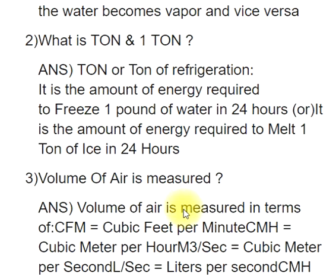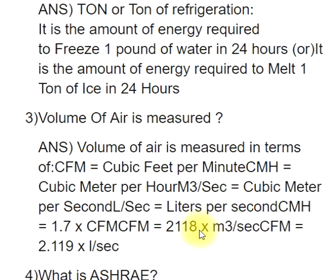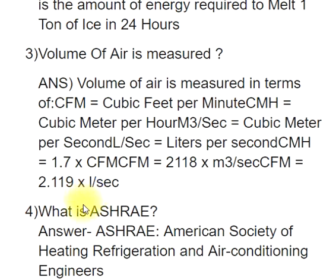Q3: Volume of air is measured. ANS: Volume of air is measured in terms of CFM (cubic feet per minute), CMH (cubic meter per hour), M3/s (cubic meter per second), L/s (liters per second). CMH equals 1.7 × CFM; CFM equals 2118 × M3/s; CFM equals 2.119 × L/s.